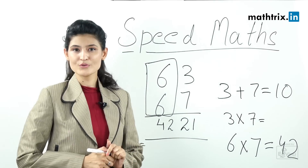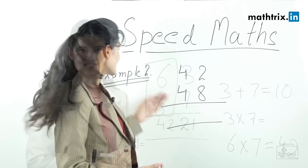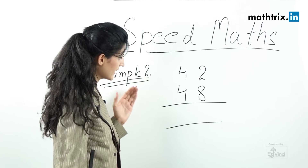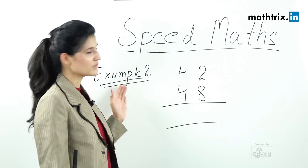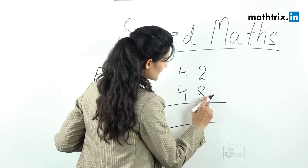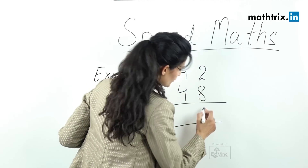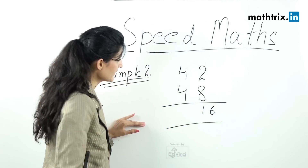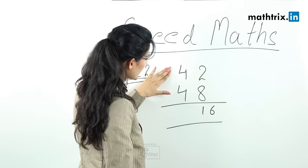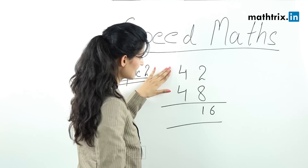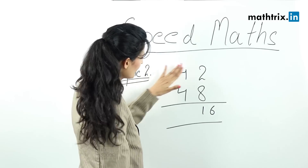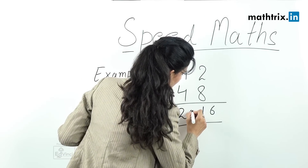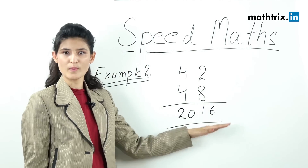Now let's move to example number 2: 42 × 48. Step 1 — multiply the unit digits: 8 × 2 = 16, so 16 are the last two digits. Then take the remaining number 4 and multiply by the next integer, which is 5: 4 × 5 = 20. So the answer is 2016.